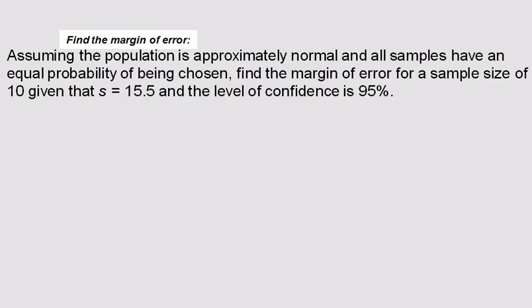So let's find the margin of error with a small sample. Assuming the population is approximately normal and all samples have an equal probability of being chosen - it's a nice way of saying you can use the T chart. Find the margin of error for a sample size of 10, small sample, use a T. Given that S equals 15.5, level of confidence is 95%.